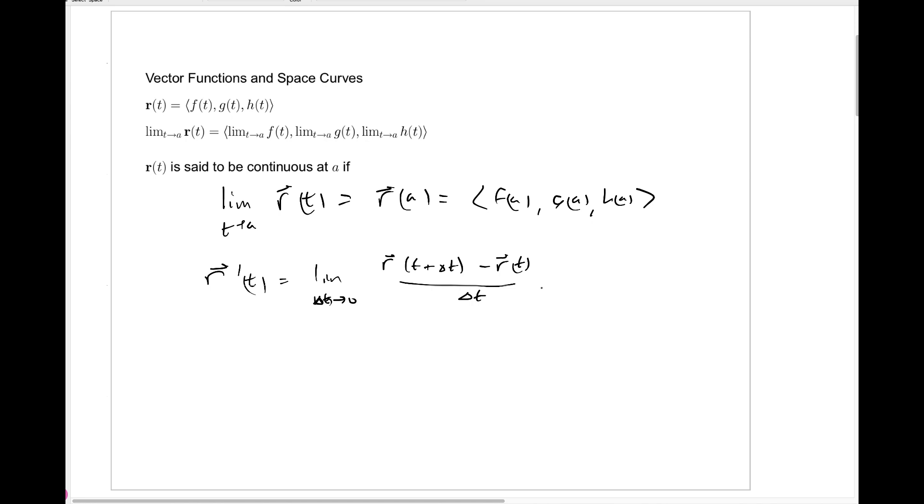And then if we just separate that into components, what we get is a limit as delta t approaches 0 of, then in each component we'll have the same sort of limit expression. We'll have the limit as delta t approaches 0 of f of t plus delta t minus f of t over delta t. The second component will be the limit as delta t approaches 0 of g of t plus delta t minus g of t over delta t. And the third component will be the limit as delta t approaches 0 of h of t plus delta t minus h of t over delta t.